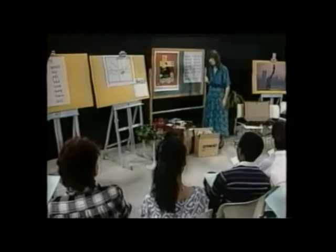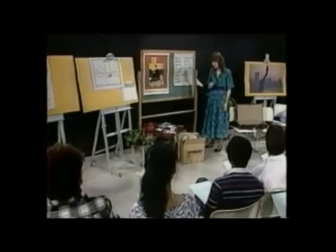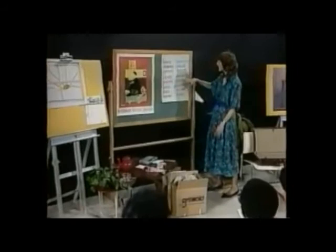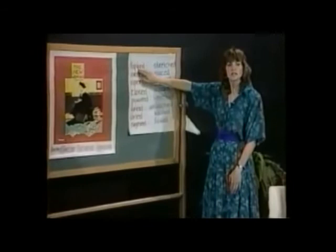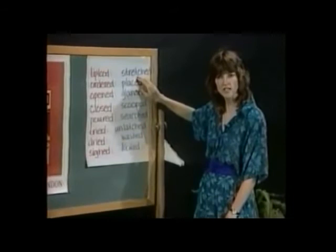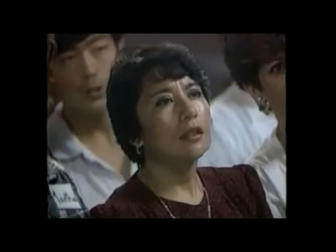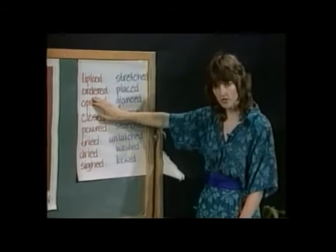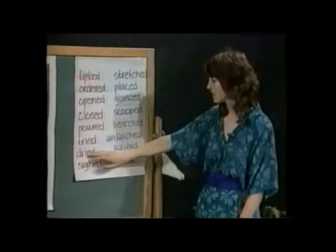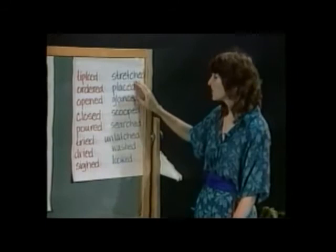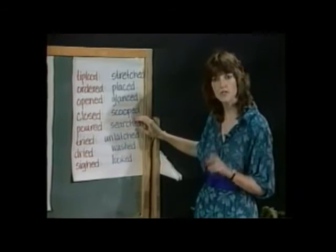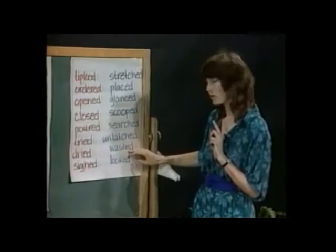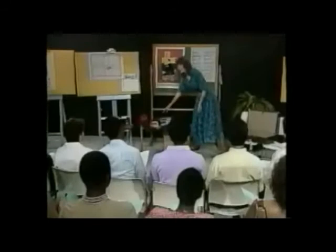The teacher affirms students are very smart and that this is easy — piece of cake. Attention then moves to pronunciation, specifically the past tense endings. Verbs are displayed in color-coded groups to help students hear the difference between endings pronounced as /d/ or /t/. Students practice reading: tiptoed, ordered, opened, closed, poured, tried, dried, sighed, stretched, placed, glanced, stirred, unlatched, washed, looked.